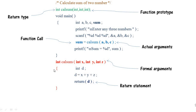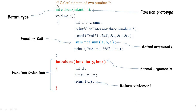This function is returning a value, and we are printing it in the `void main` function. The data type of `d` is integer, which matches the return type of the function — that's why all of these are integer. This whole block is called the function definition. So we have seen: function prototype, function call, return type, actual arguments — which are passed when calling the function — and formal arguments, which receive those values inside the function definition, along with the return statement.